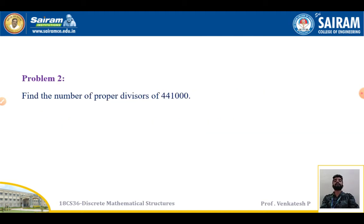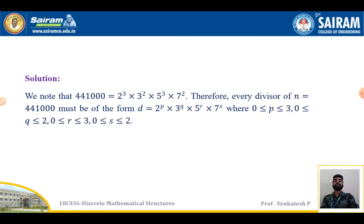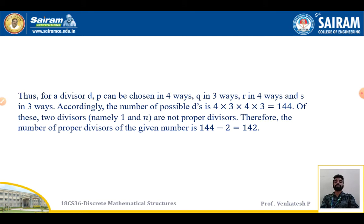Problem 2: Find the number of proper divisors of 441,000. We note that 441,000 can be represented as 2 cubed times 3 squared times 5 cubed times 7 squared. Therefore, any divisor of n must be of the form 2^p times 3^q times 5^r times 7^s, where p varies from 0 to 3, q varies from 0 to 2, r varies from 0 to 3, and s varies from 0 to 2.